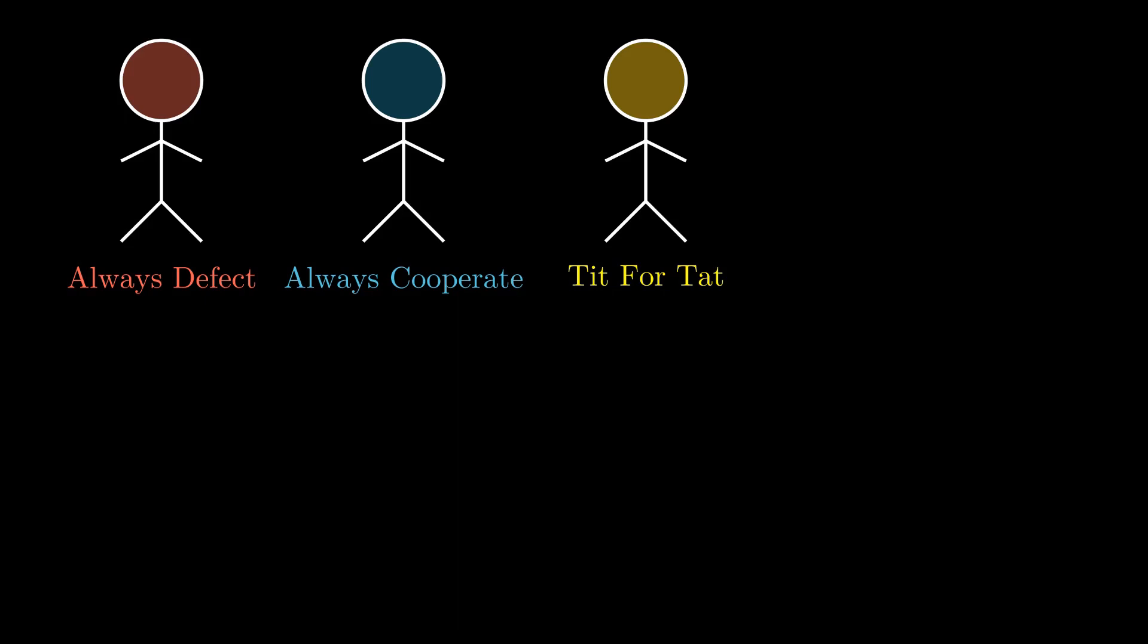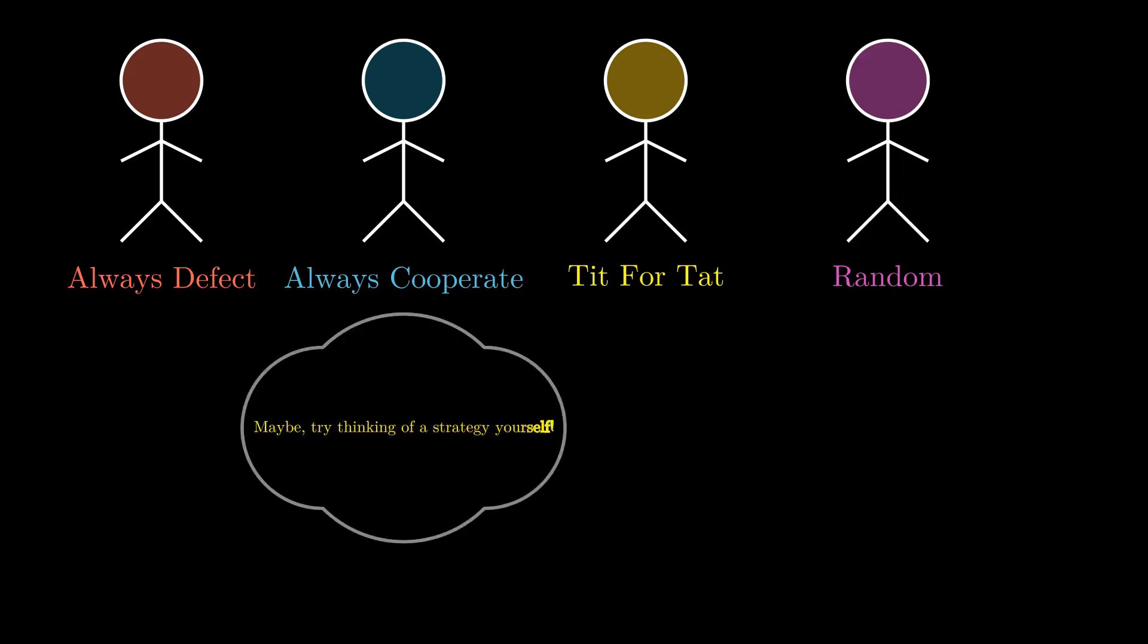Random strategy, as the name suggests, is a kind of prisoner who defects or cooperates randomly. Remember that you can find tens if not hundreds of strategies out there in the wild. Even you could come up with one strategy. But I thought that looking at these particular four strategies could be interesting.